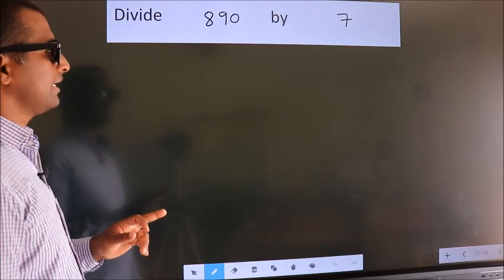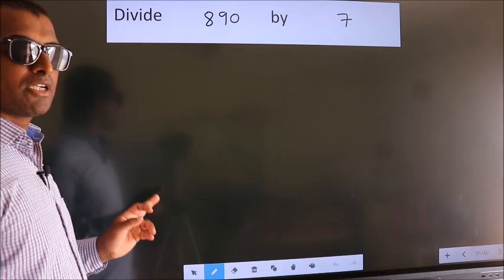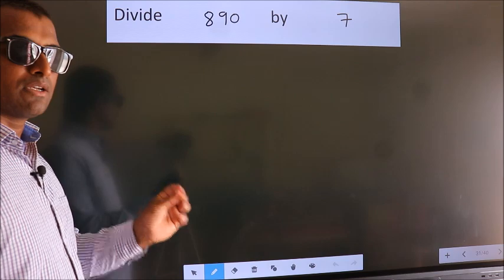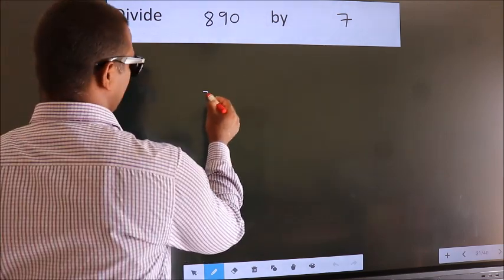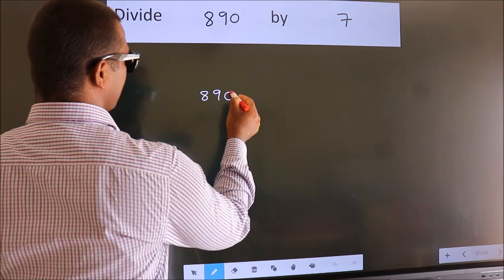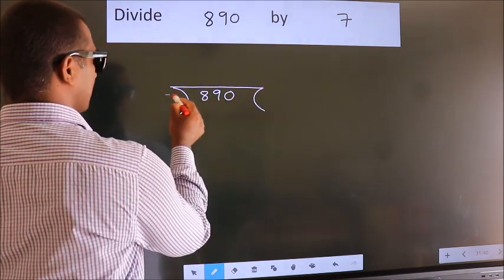Divide 890 by 7. To do this division, we should frame it in this way. 890 here, 7 here.